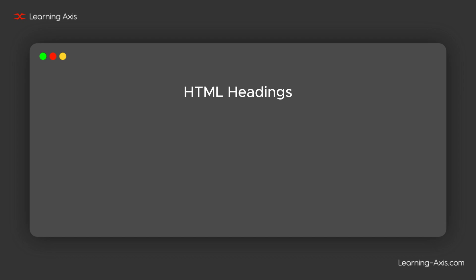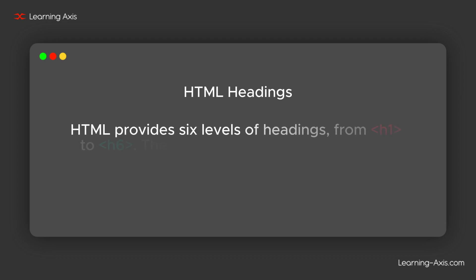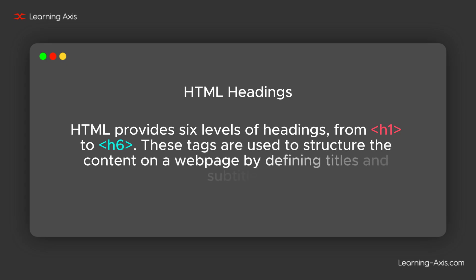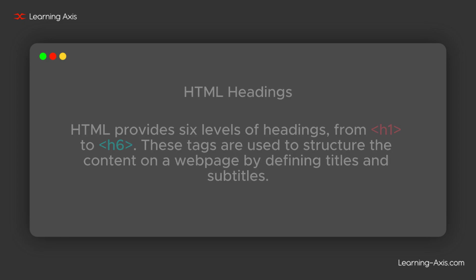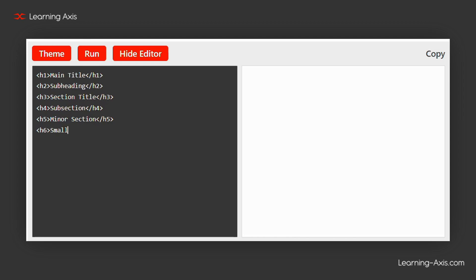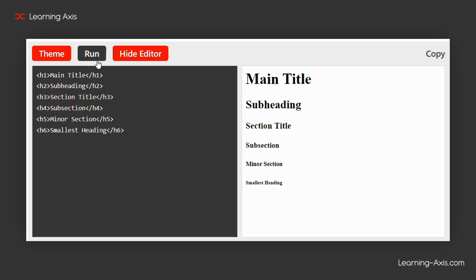First, we start with HTML headings. HTML provides six levels of headings, from H1 to H6. These tags are used to structure the content on a web page by defining titles and subtitles. H1 is the most important heading, often used for the main title. H6 is the least important, typically used for minor sections. Headings help with both SEO and readability by creating structure.